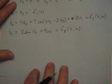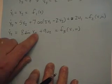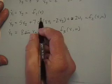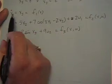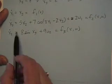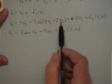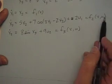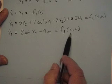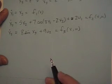I've rewritten the state-space equations. They are nonlinear because we have sine and cosine in them. I've defined f1, where x1-dot equals x2, and that is f1 of x. Similarly, x2-dot is f2 of x and u, because we have u in there. And x3-dot equals f3 of x and u.